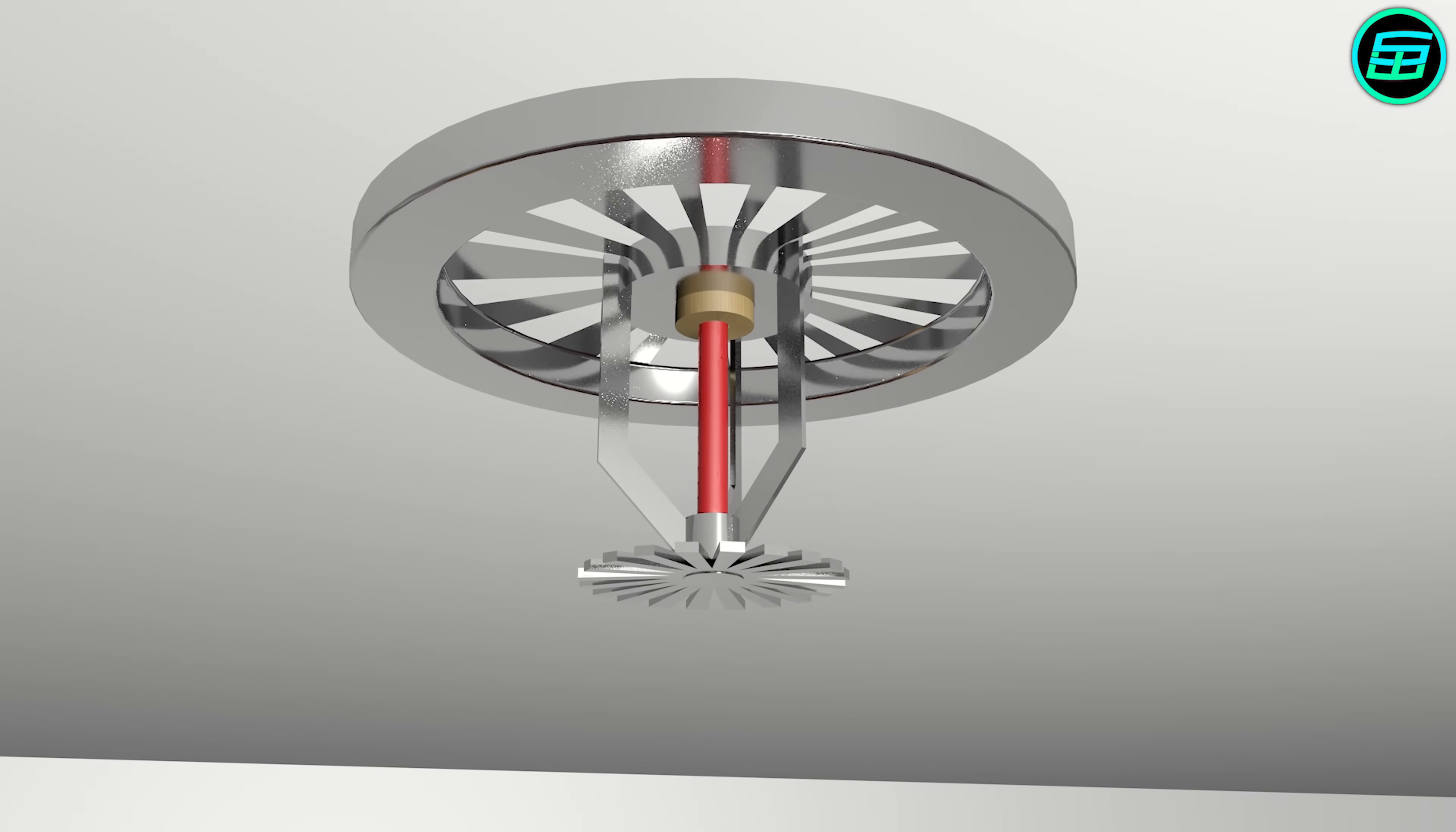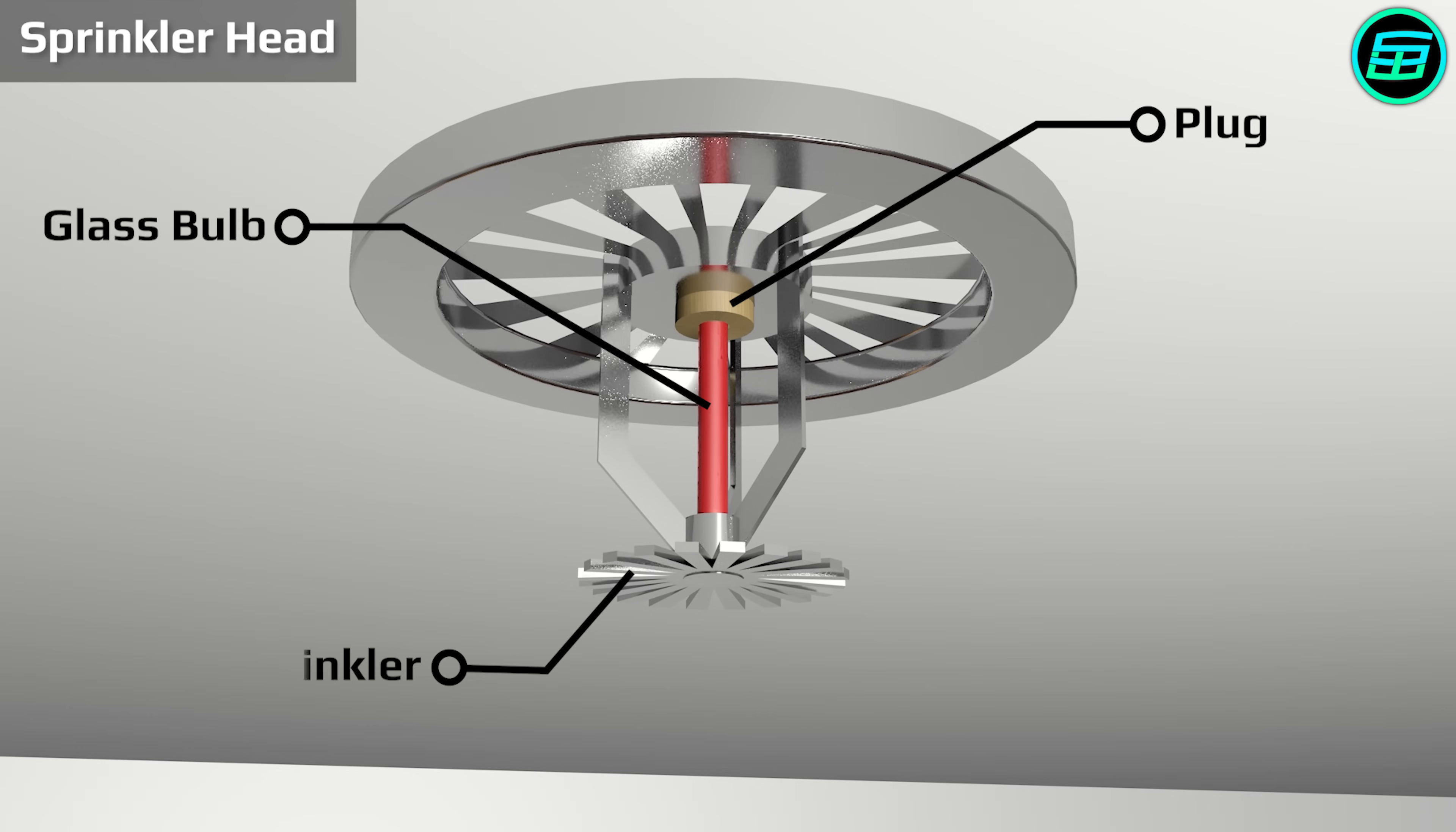The essential components are a water supply system and a fire sprinkler head. The sprinkler head is made up of a plug, a liquid-filled glass bulb, a sprinkler and a frame.